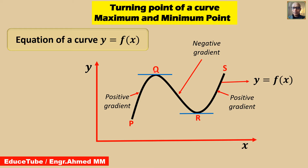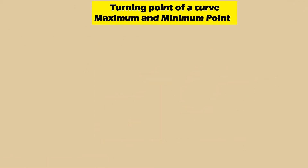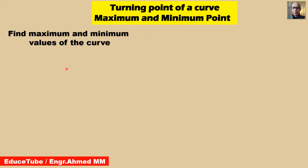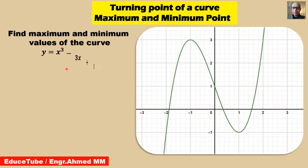So let's move to the next slide to see how to get maximum and minimum points on a curve. To find maximum and minimum point values of the curve, I am taking the equation y equal to x cubed minus 3x plus 1. This is the equation and this is the curve of this equation.